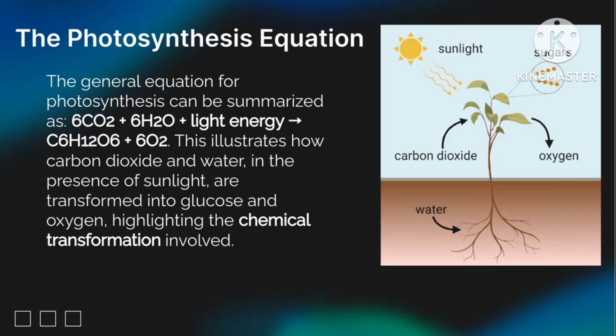The photosynthesis equation. The general equation for photosynthesis can be summarized as: six molecules of carbon dioxide plus six molecules of water plus light energy converts into glucose plus oxygen. This illustrates how carbon dioxide and water, in the presence of sunlight, are transformed into glucose and oxygen, highlighting the chemical transformation involved.